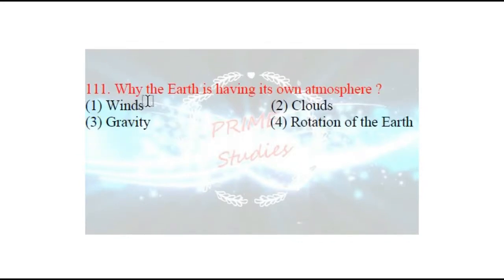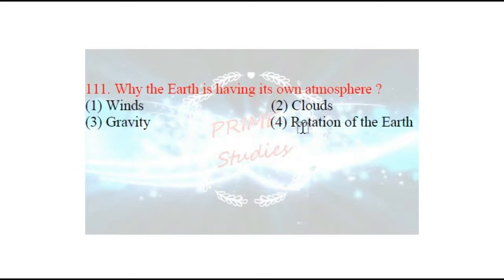Next question: why does the earth have its own atmosphere? Prithvi ke paas apna atmosphere kyun hai? Jo karan hai ki prithvi ke paas apna vatavaran hai — the options are: winds, clouds, gravity, or rotation of the earth. Earth ka jo atmosphere hai, woh uske gurutva bal ke karan hai. Prithvi ka gurutva bal gason ko apne charon aur baandhe rakha hai, jis se unka avaran ban gaya hai — jise hum vatavaran bolte hain.